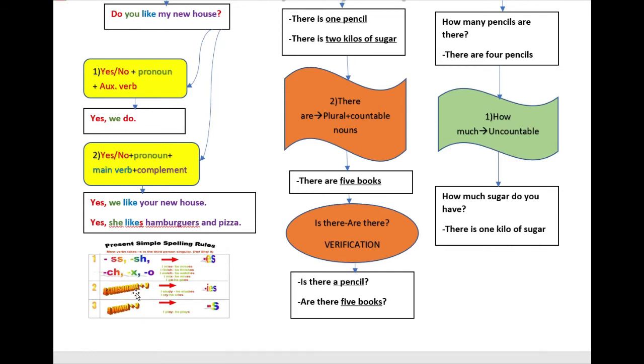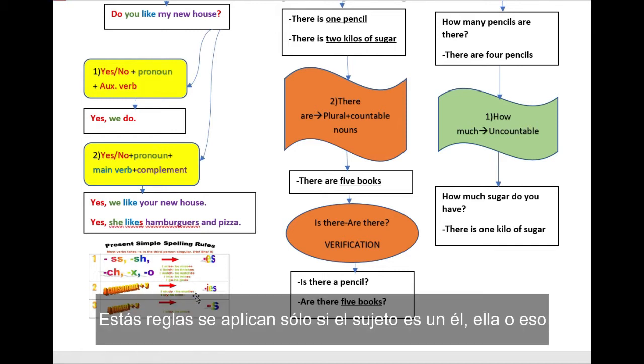A consonant plus a Y at the end of the verb, you have to add I, E, S. For example, he studies, he cries. A vowel plus a Y at the end of the verb, you have to add an S. For example, he plays. These rules only apply when the subject is a he, a she, or an it.